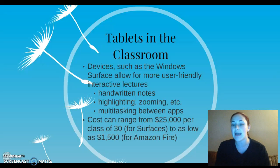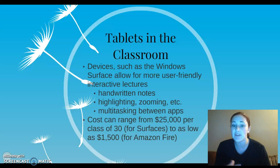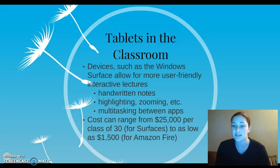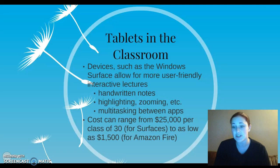You can also multitask by having different apps open at the same time and switching between windows, so it makes learning catered and altered to what that particular student needs. The cost for Windows Surfaces can range from $25,000 per class of 30 — they are a very universal and interactive tool, probably the best tablet you could have. You could also get a cheaper tablet: an Amazon Fire for as low as $50 each, which would be good for younger classes. That would total about $1,500 for a class of 30, which is very affordable compared to the average $250 per student spent on textbooks each year.